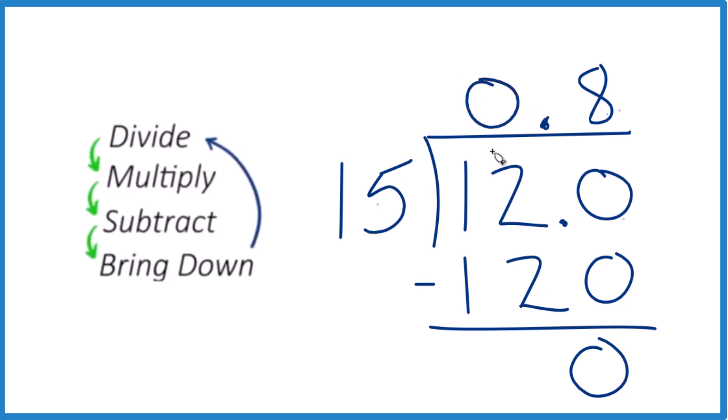So let's put a zero up here so it looks a little bit neater. 12 divided by 15 is 0.8. 0.8 times 15, that would give you 12.